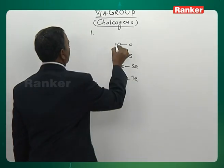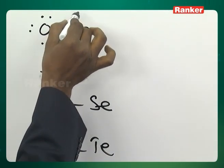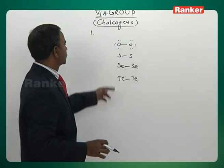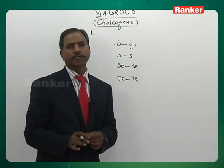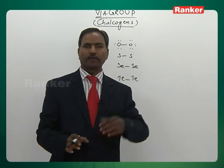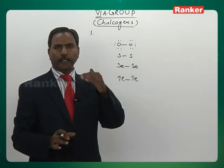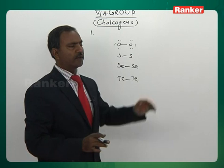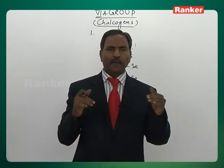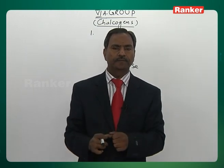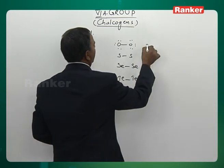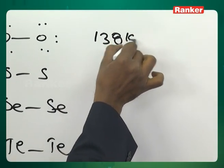When we talk about the oxygen to oxygen single bond, after singly bonding between oxygen and oxygen, three pairs of lone pair electrons are present on each oxygen atom. There is repulsion between these lone pairs, and therefore the oxygen to oxygen bond energy is very less — nearly 138 kilojoules per mol.